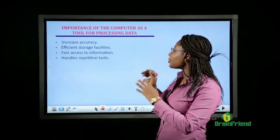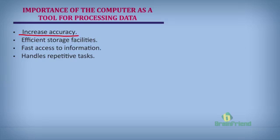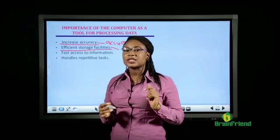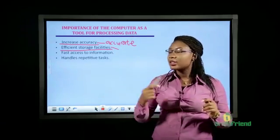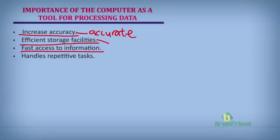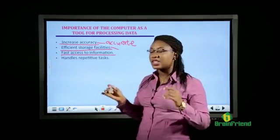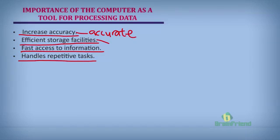The computer is an important tool for data processing. The first reason is efficient storage facility — the computer can store data using devices like flash drives and hard drives. The computer also provides fast access to information; whatever information we need, we can get it easily. Lastly, the computer handles repetitive tasks, which is where programming comes in.